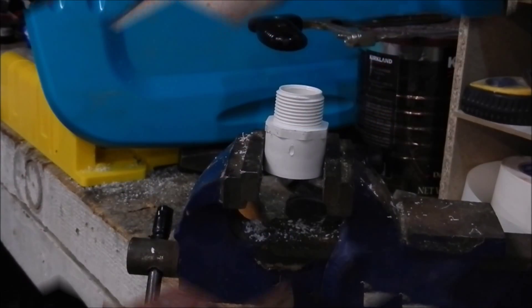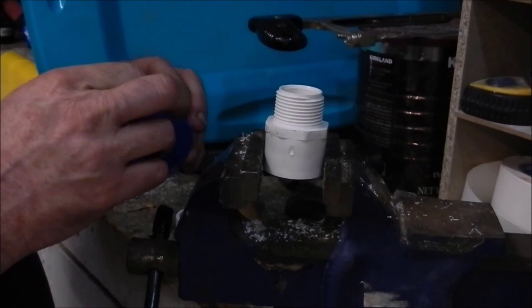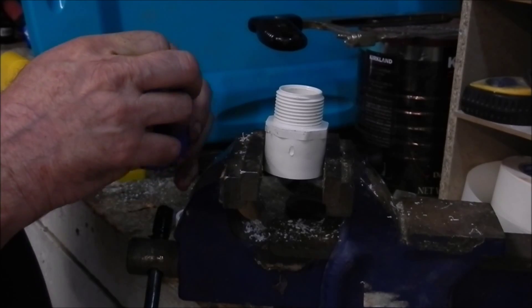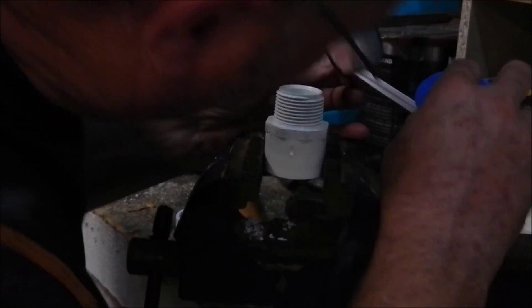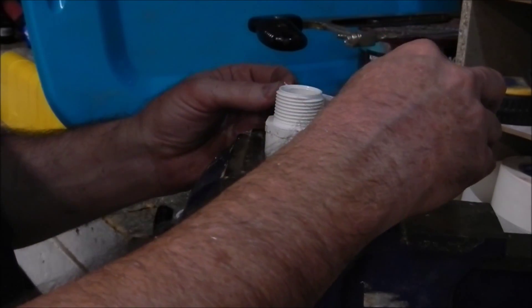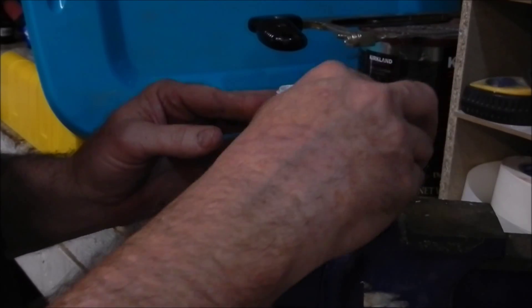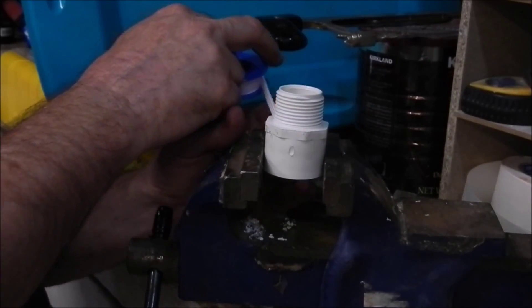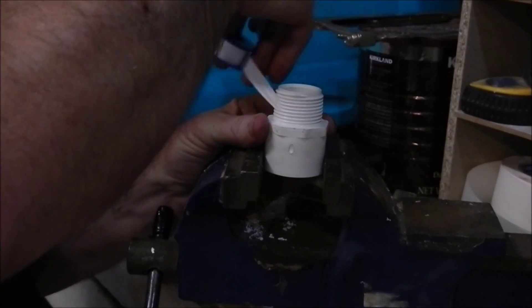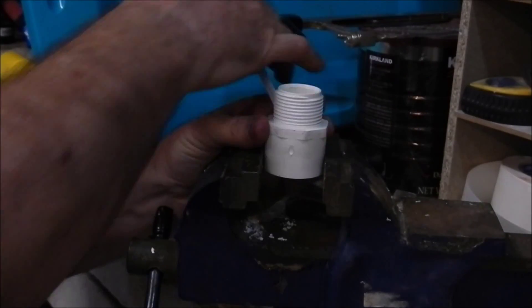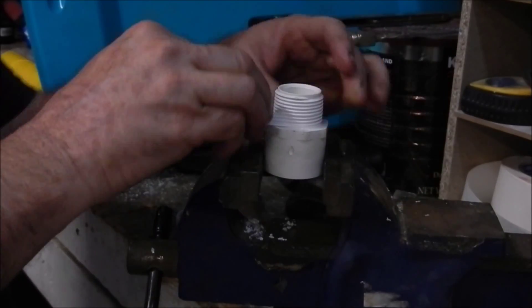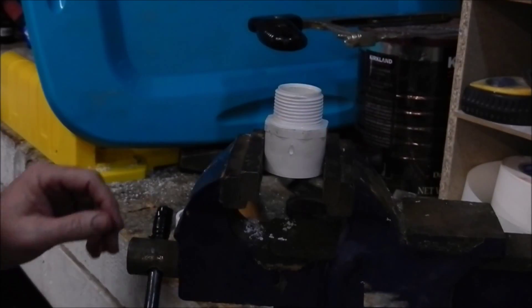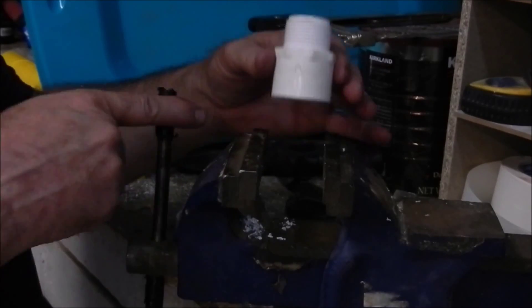I just want to put a little Teflon tape on here just to make sure I get a good seal. Get the dirt and dust off a little bit. You want to go the same way the threads are going and that way you can pull them kind of tight and they won't back off on you. Just kind of put one around there, go right down. That's probably good enough, pull that tight and we're ready to install that and thread it in.